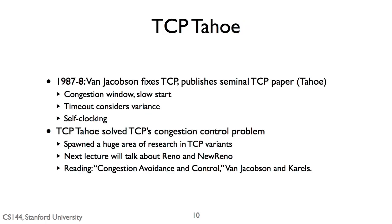Those three mechanisms — a congestion window, better RTT estimation that considers variance, and self-clocking — are really the foundation of TCP Tahoe. In 1987–1988, Van Jacobson fixed TCP with these mechanisms plus a few other tricks and published the seminal TCP Tahoe paper. This basically solved TCP's congestion control problem and the internet started working again. It spawned a huge area of research into how to manage your sending rate to avoid congesting the network. In the next video, I'll talk about TCP Reno and New Reno, which are closer to what's done today and add a couple of new mechanisms. I highly recommend reading Van Jacobson's original paper, 'Congestion Avoidance and Control.'